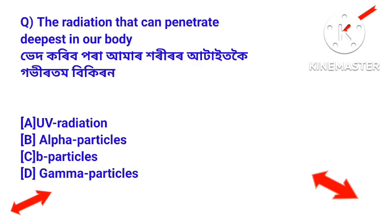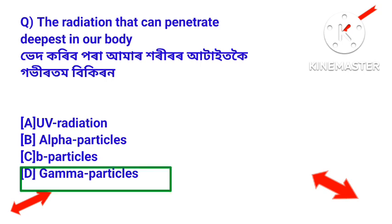Question: The radiation that can penetrate deepest into our body is which? The radiation that penetrates deepest into our body is gamma rays — gamma radiation has the greatest penetrating power.